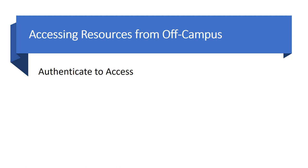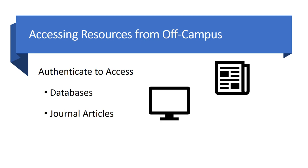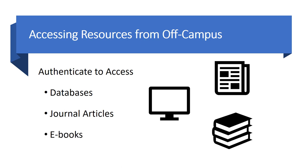These resources include databases, full-text journal articles, and ebooks. In order to use these resources from off-campus, you need to authenticate, meaning that you need to prove your affiliation with the university. Using the GWVPN is the preferred way to do this.